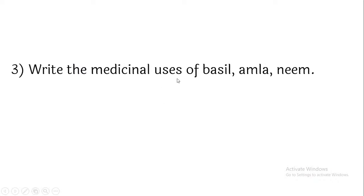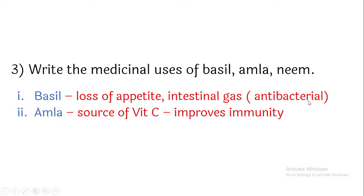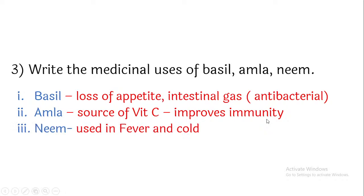Write the medicinal uses of Bacill — Bacill means Tulsi (basil). It is used for loss of appetite and intestinal gas. Bacill has many uses and is antibacterial in quality. Amla is a source of vitamin C, and it also improves our immunity.